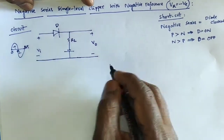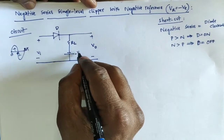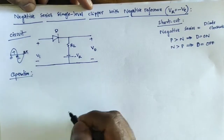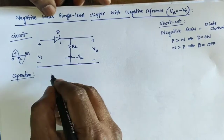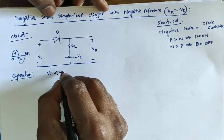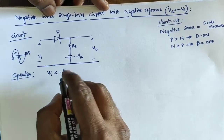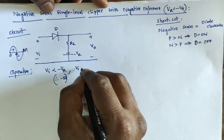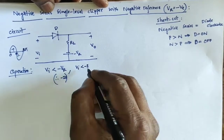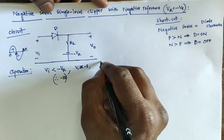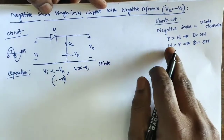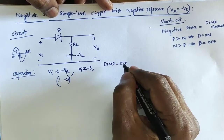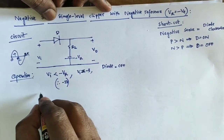The reference value is negative, so the value is minus Vr. This is the operation of a negative series single-level clipper with negative reference. If the input Vi is less than the reference value minus Vr — suppose Vr is minus two volts — and Vi is minus three volts, the diode's p-side value is less than the n-side value, so the diode acts as an off state.